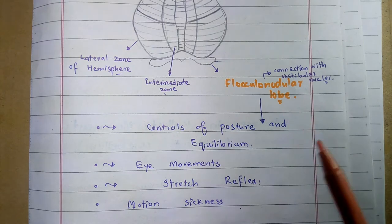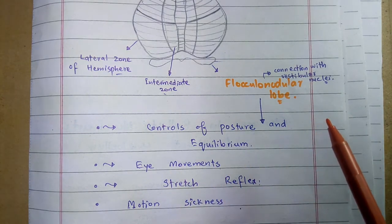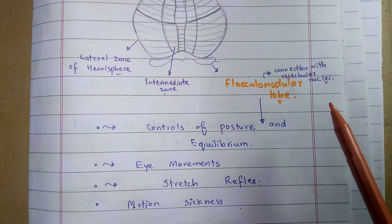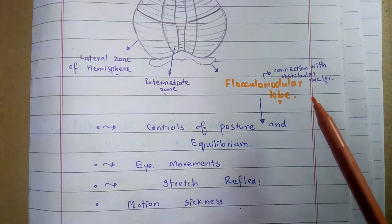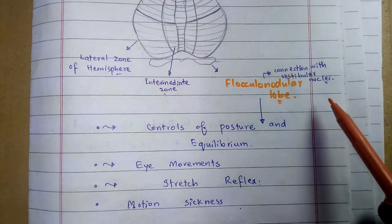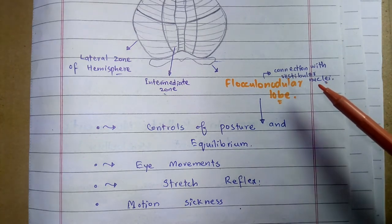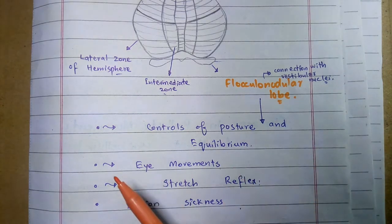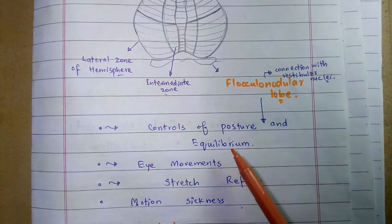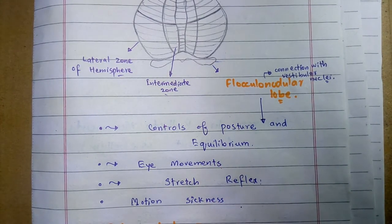The flocculonodular lobe is also called the vestibular cerebellum because it has connections with the vestibular nuclei, which are present in the inner ear. This zone is concerned with the control of posture and equilibrium, as Purkinje fibers go directly to the vestibular nuclei.